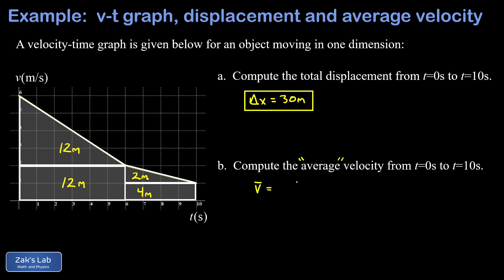Our average velocity is going to be delta x, that's our total displacement, divided by how long it took for that displacement to occur. We call that delta t.